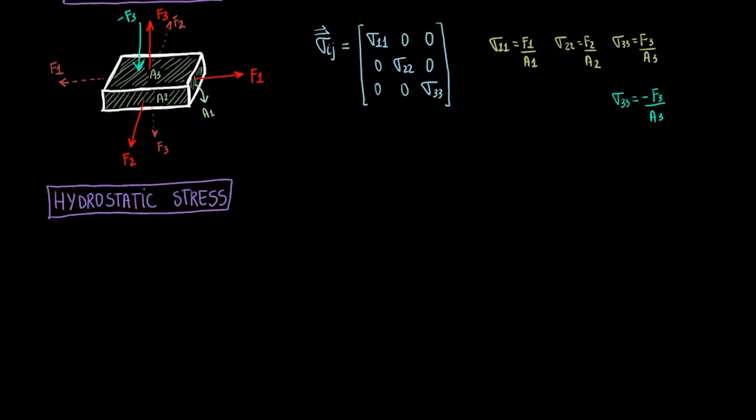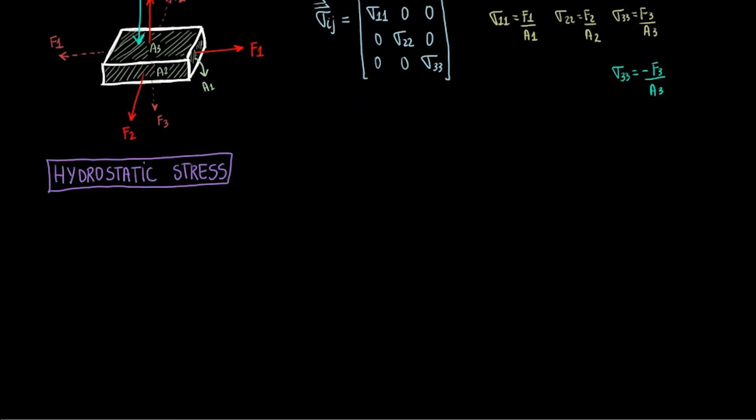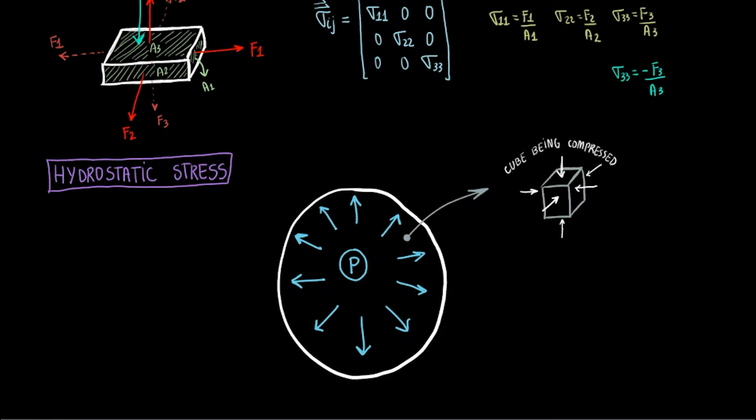Let's talk about hydrostatic stress now. This one is a little more fun. Imagine a balloon filled with air. There is pressure acting from inside the balloon. A stress tensor of an elemental cube of air inside the balloon will have three diagonal components. All these components will be negative because the pressure is crushing this elemental cube, so the components represent compressive stress.